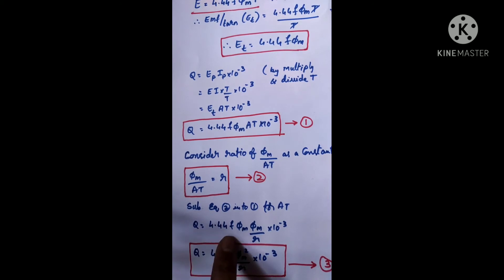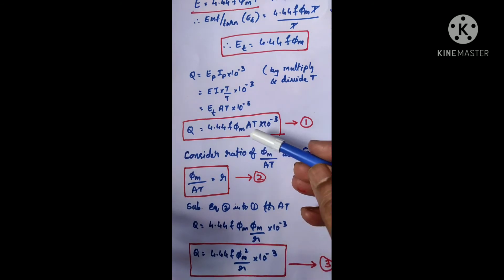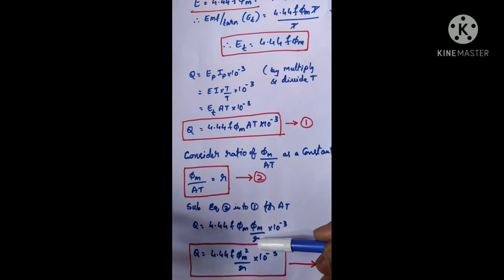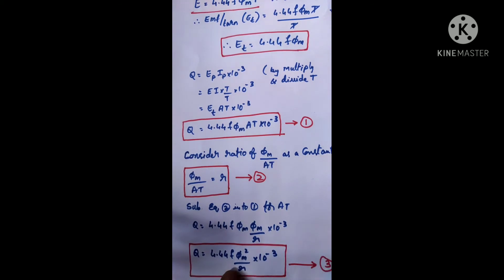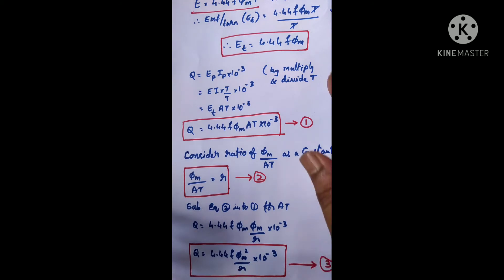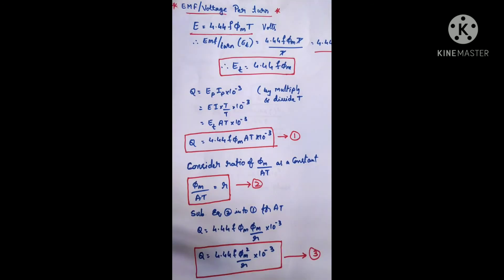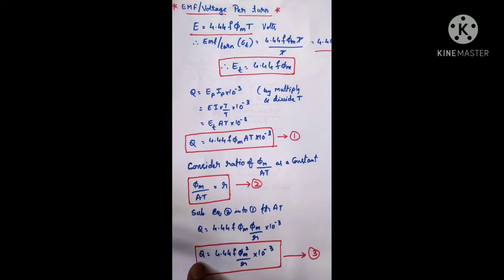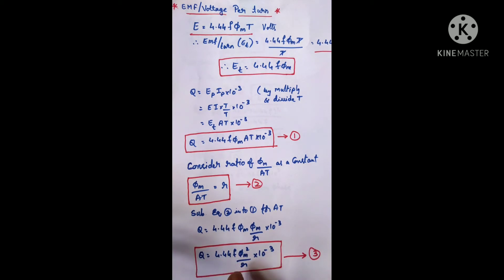Substituting AT = φm / R into Equation 1, we get Q = 4.44 × f × φm × (φm / R) × 10⁻³, which simplifies to Q = 4.44 × f × φm² / R × 10⁻³. Call this Equation 3. Now using Equation 3, let us derive an expression for φm, which we will then substitute back into the ET formula.